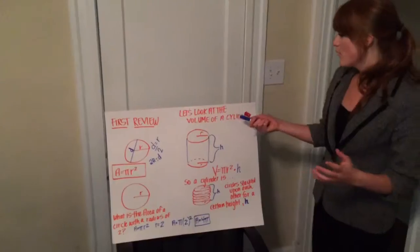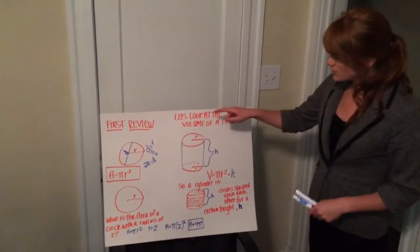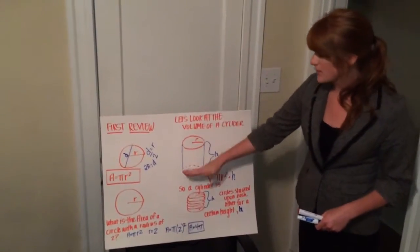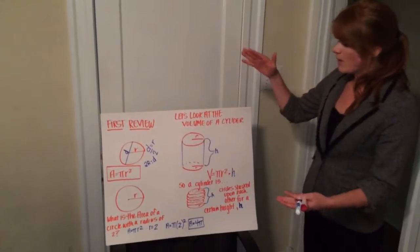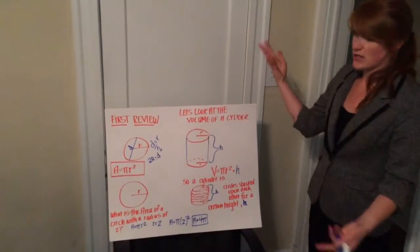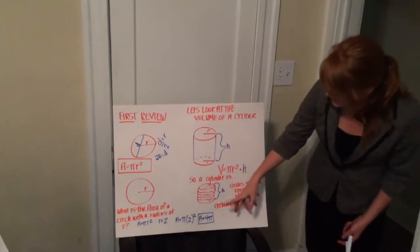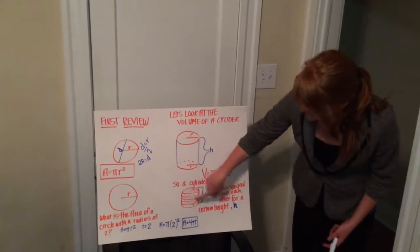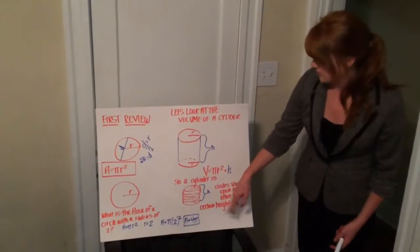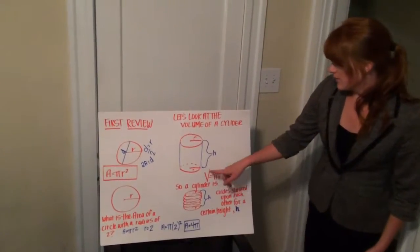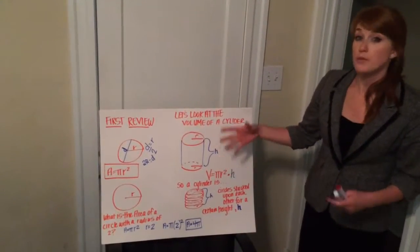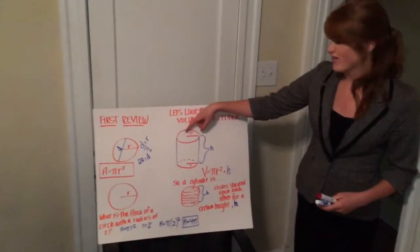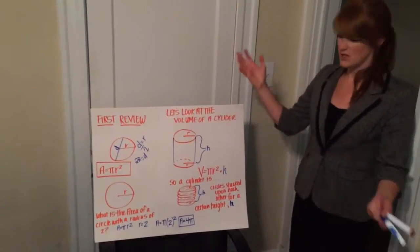Now let's look at the volume of a cylinder. We have our circle here, which is the top of the cylinder, and then we have a circle at the bottom. There's a height between them — that's what creates a cylinder. Think of it as a lot of circles stacked up on top of each other for height h. So our volume is going to be equal to pi r squared — our area of a circle — times height. That seems simple, right?